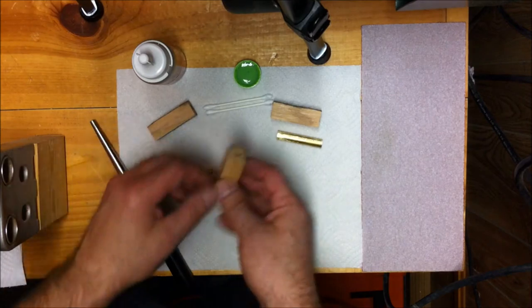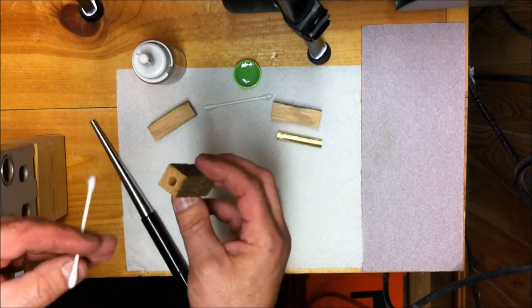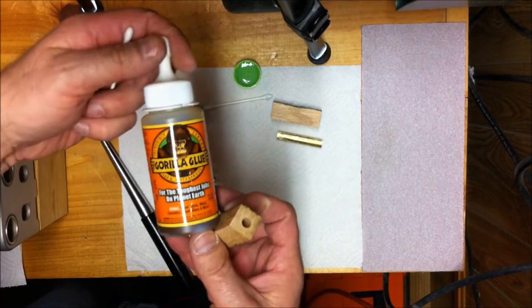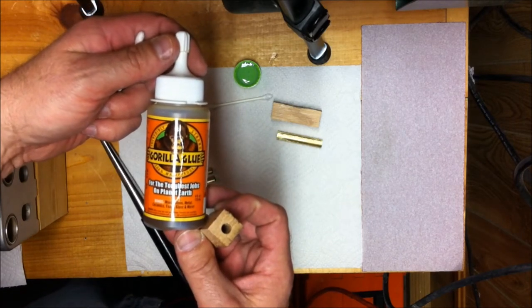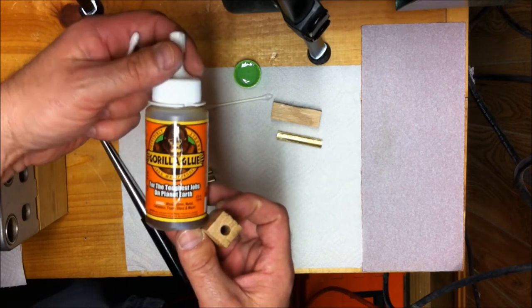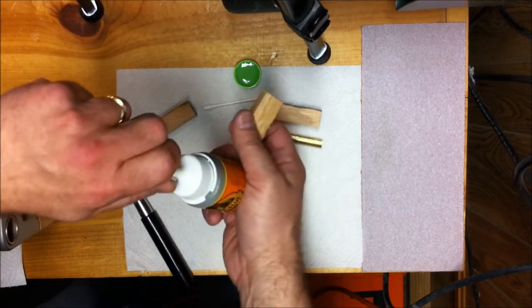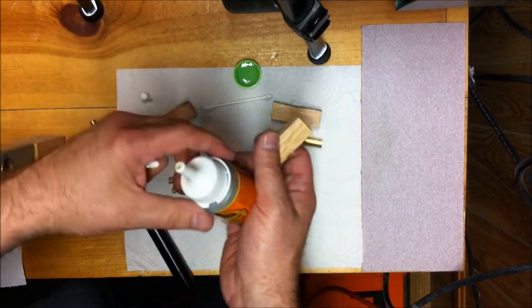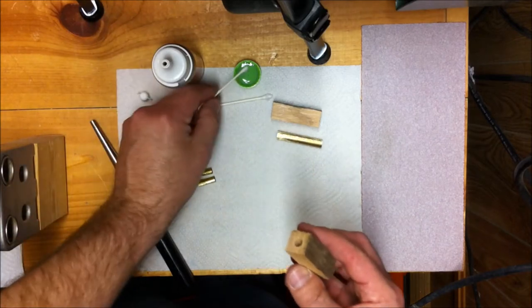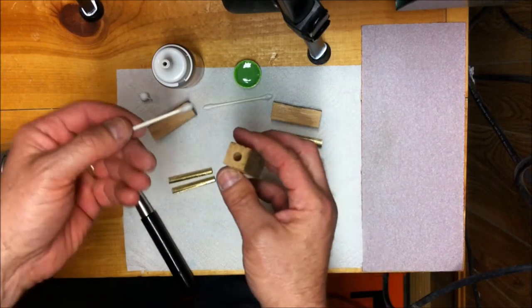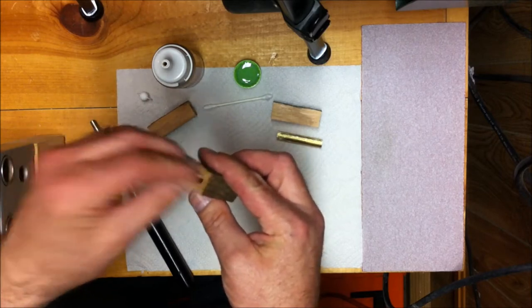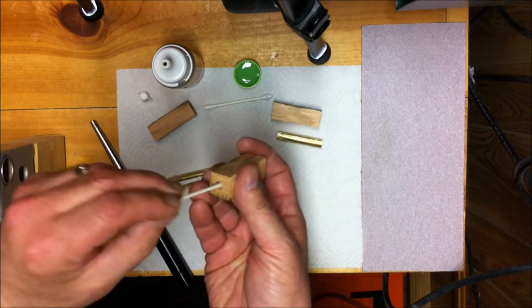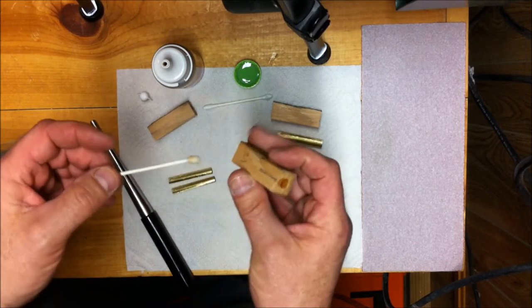Now the next thing you want to do is take a Q-tip. I use Gorilla Glue, I really like it. It foams a little bit but it does a good job of holding the brass tubes inside of the wooden blanks. Gorilla Glue is activated with water. So I'm going to take a Q-tip, dip it in a little bit of water and basically swab the inside of my blank, get a little dampness, a little moisture in there.